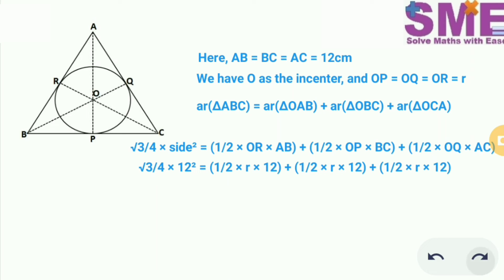Further solving this equation we get root 3 by 4 into 12 square is equal to 3 of half of 12 into radius.